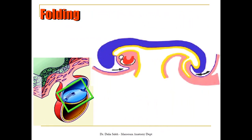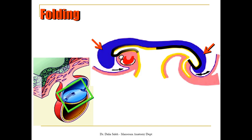Another factor affecting embryo growth is the formation of the neural tube. Because of the growth of the brain, the formation of the head fold, and also the formation of the tail fold, the embryo will bend in a cephalocaudal direction. Part of the yolk sac will be trapped inside the tail fold forming the hindgut, and also inside the cephalic or head fold forming the foregut.